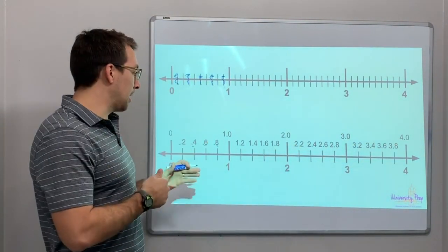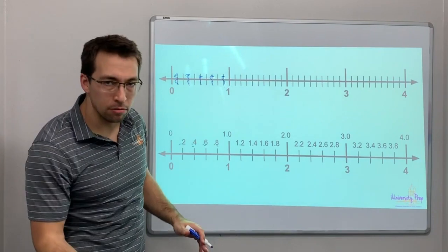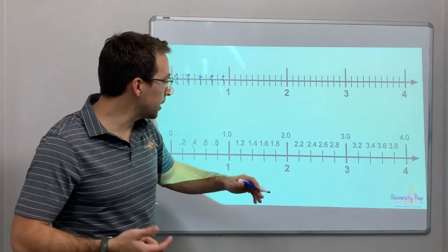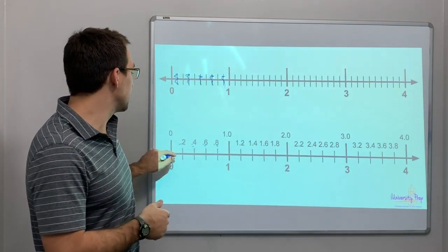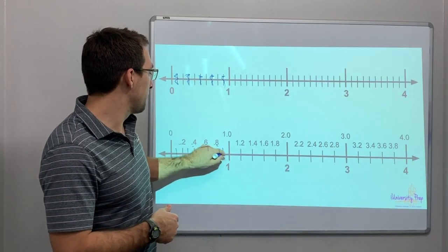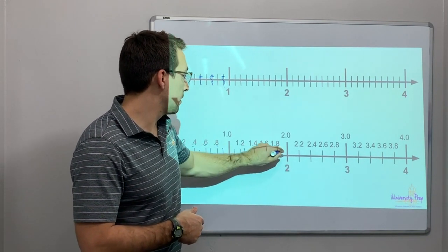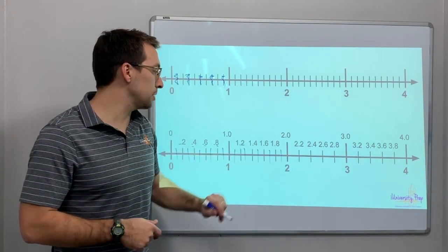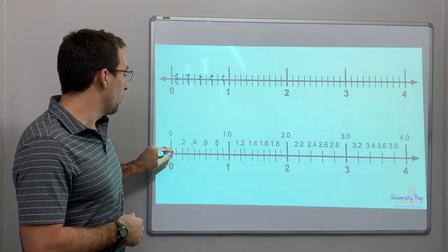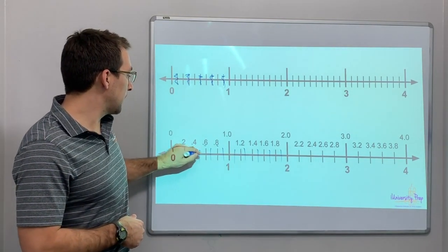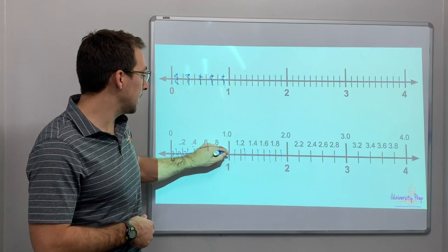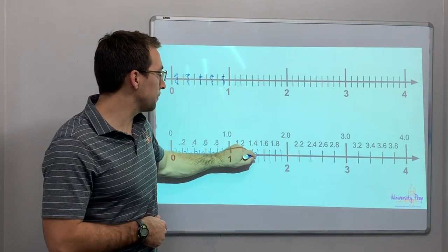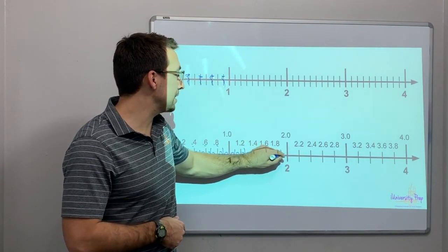To get to 2.0, there's 20 spaces. 1, 2, 3, 4, 5, 6, 7, 8, 9, 10, 11, 12, 13, 14, 15, 16, 17, 18, 19, 20.